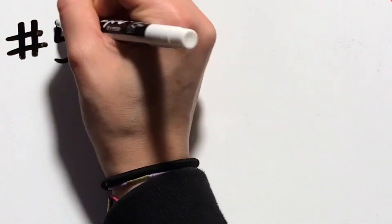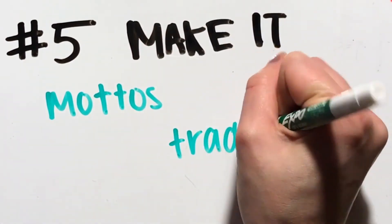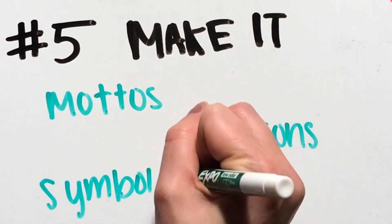Next, you need to make your vision happen. That being said, yourself and the rest of the staff need to establish mottos, traditions, and symbols that will entice people to make your vision come to life.